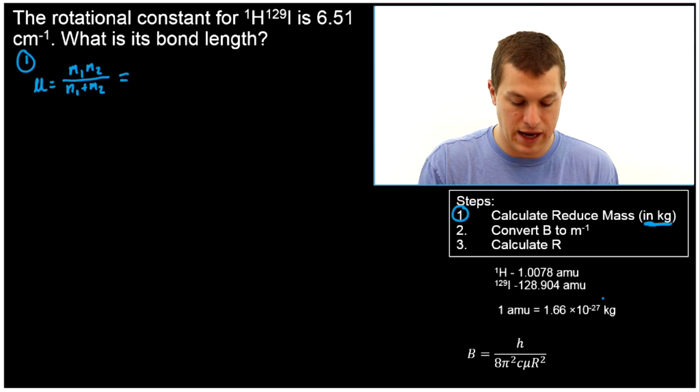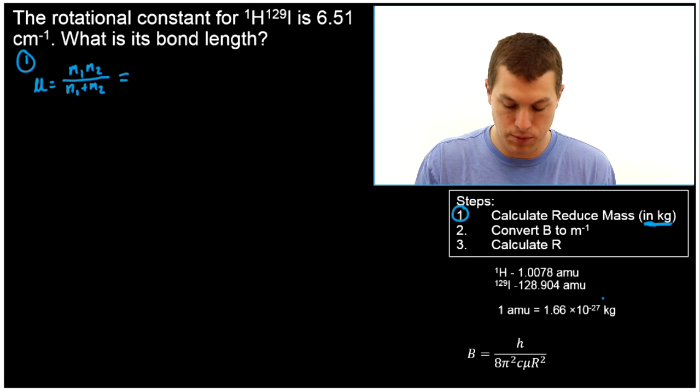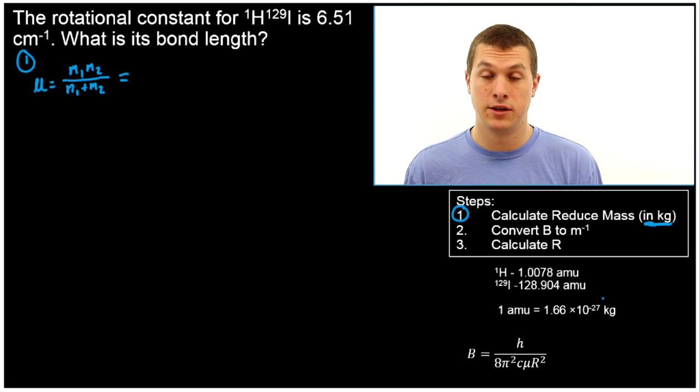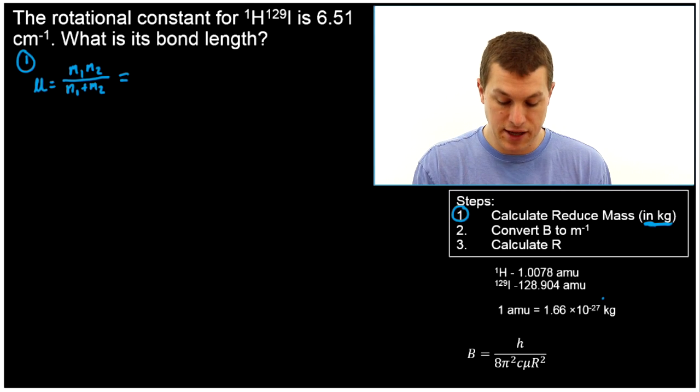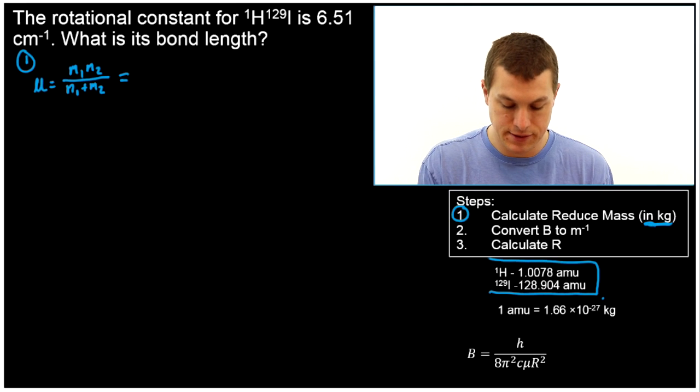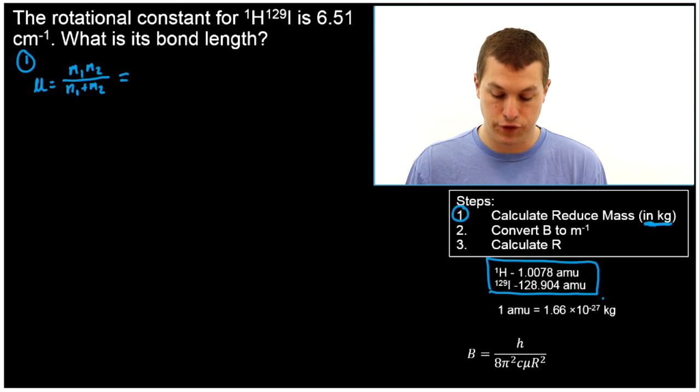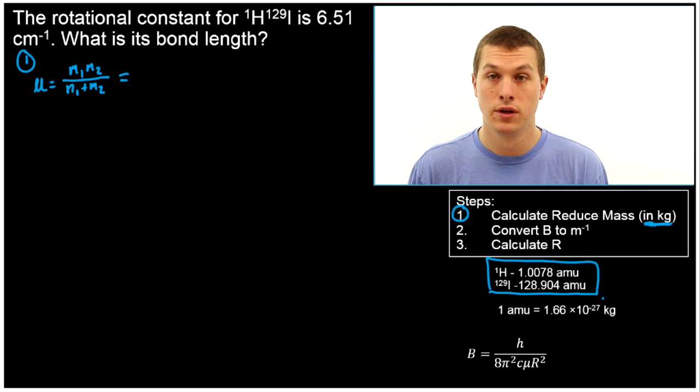So let's plug in mass 1 times mass 2 divided by mass 1 plus mass 2. Remember what we're dealing with here is hydrogen and iodine. And it tells us what specific isotopes we have. And I've written down the masses down here. And they're in terms of AMU. So first we're going to calculate the reduced mass in AMU. And then we're going to convert that to kilograms.